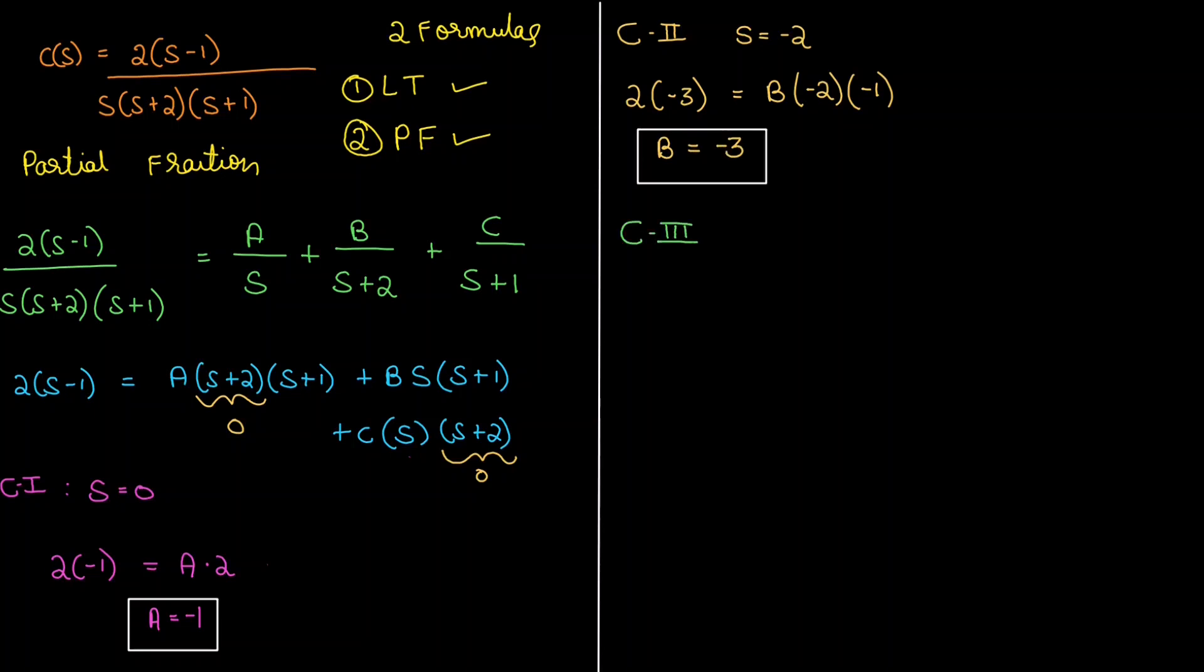Case 3: putting s equals minus 1. This will bring the other terms to 0, and hence coefficients of A and B will be 0. We will consider C equals minus 1 into 1. This should bring an answer: C equals 4.